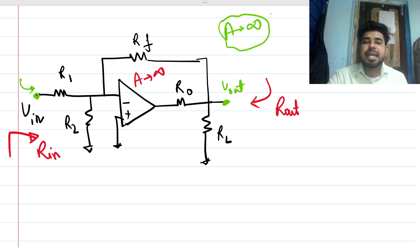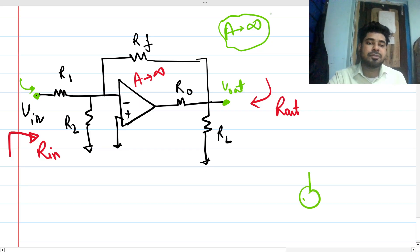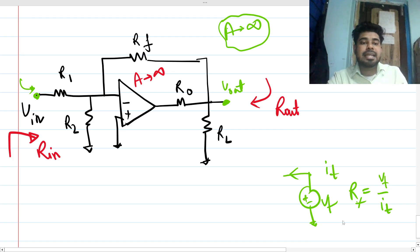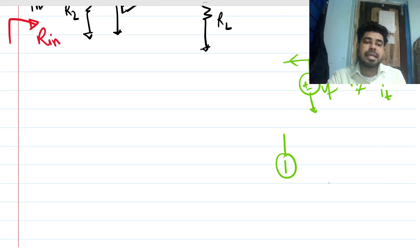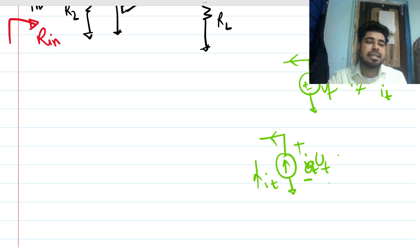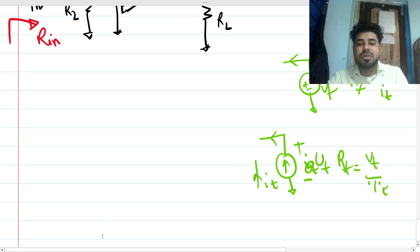To find any impedance for a node with respect to ground, we apply a test voltage v_t there and find what current i_t is coming out of that node. Then R_t = v_t / i_t. Another way is to apply a test current i_t and find what voltage appears across it — again R_t = v_t / i_t. These are the general rules. Now let's solve it.